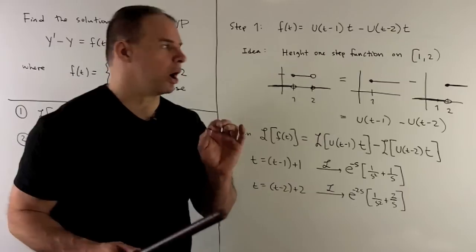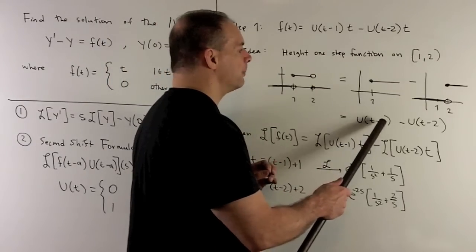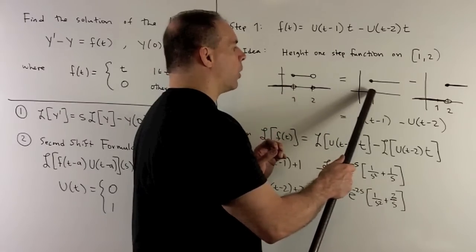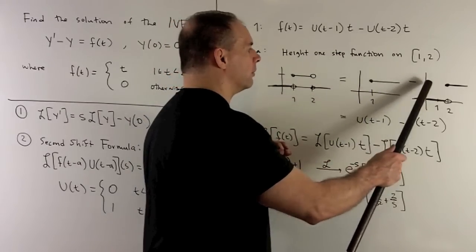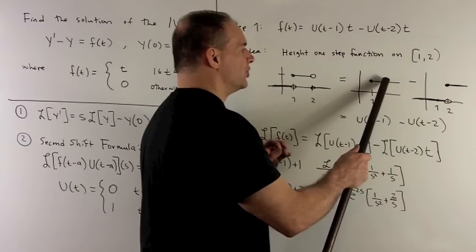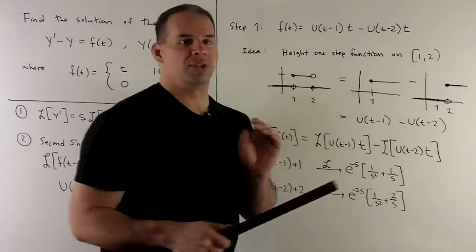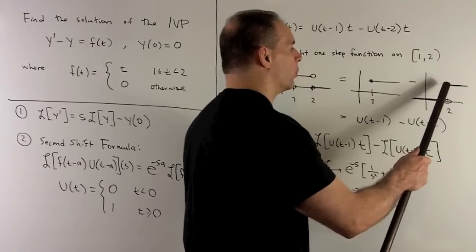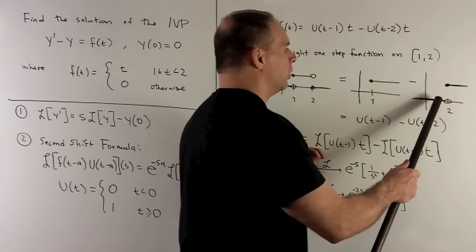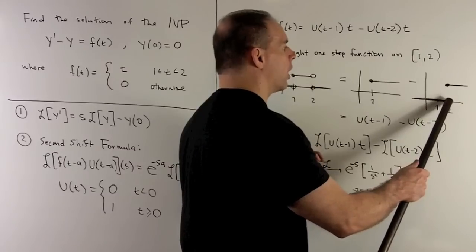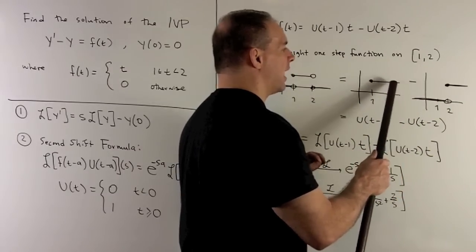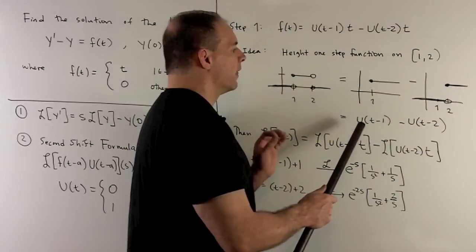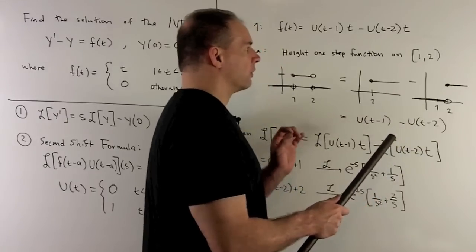If we shift to the right by one, we get u of t minus one, which is zero up to one and one to the right of one. To get zero when we're to the right of two, we subtract off the unit step function shifted by two. Between one and two we subtract zero, so it doesn't affect that interval, and beyond two we subtract one, driving everything down to zero.